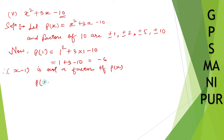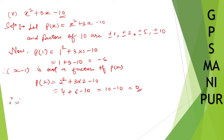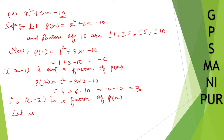Now let us take p(2). So p(2) is 2 squared plus 3 into 2 minus 10. That is 4 plus 6 minus 10. So 10 minus 10 equals 0. Since it is 0, we can say therefore x minus 2 is a factor of p(x). So let us divide p(x) by x minus 2.